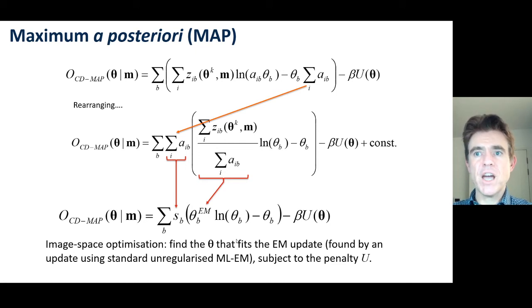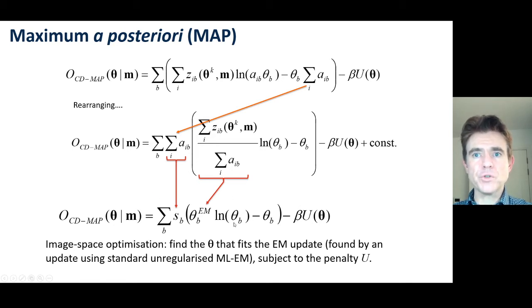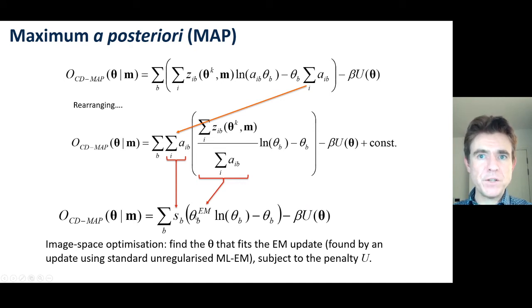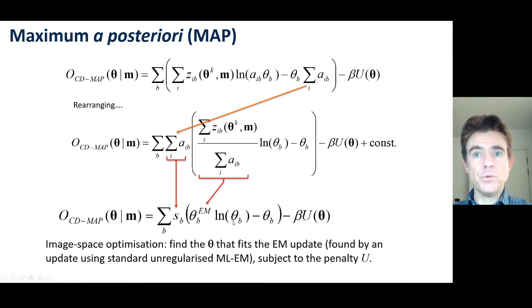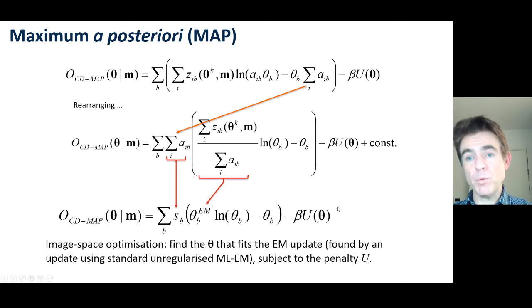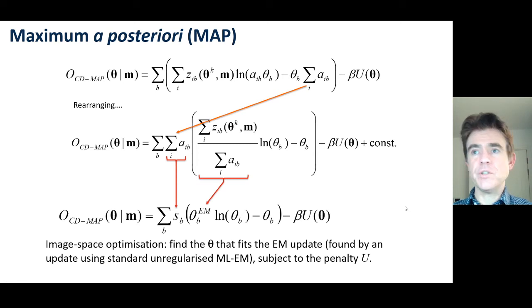Of course, we want to build in the penalty to stop theta from becoming too noisy. It would only become too noisy if it overfits to theta_EM — that noisy image we get with maximum likelihood estimation. That's why we want the penalty to prohibit that overfitting to the data.